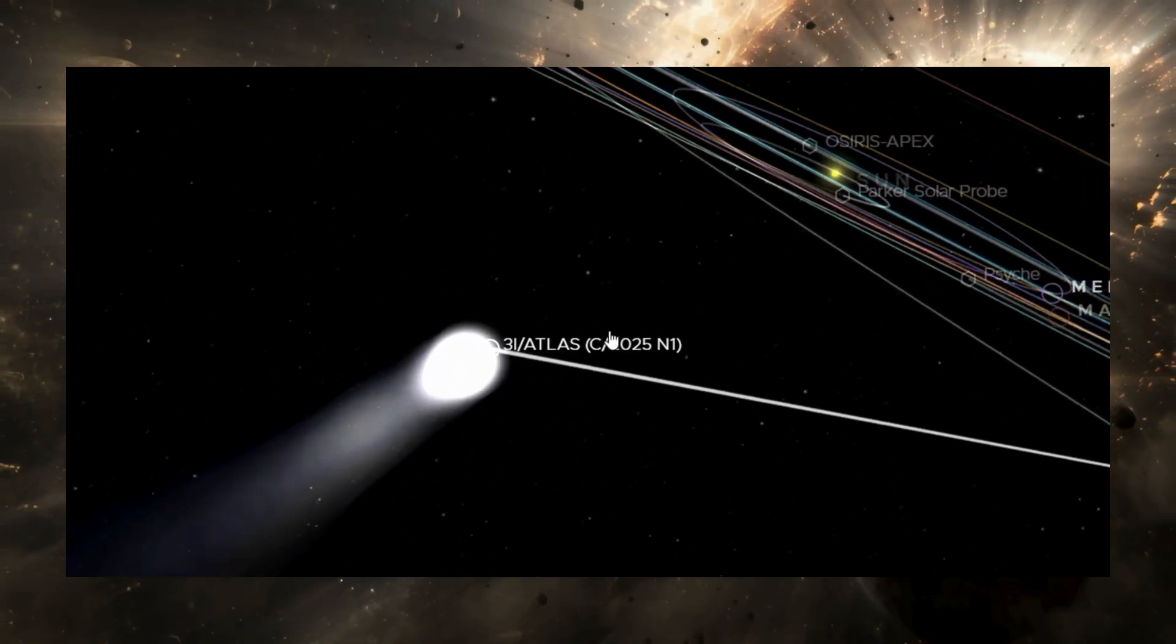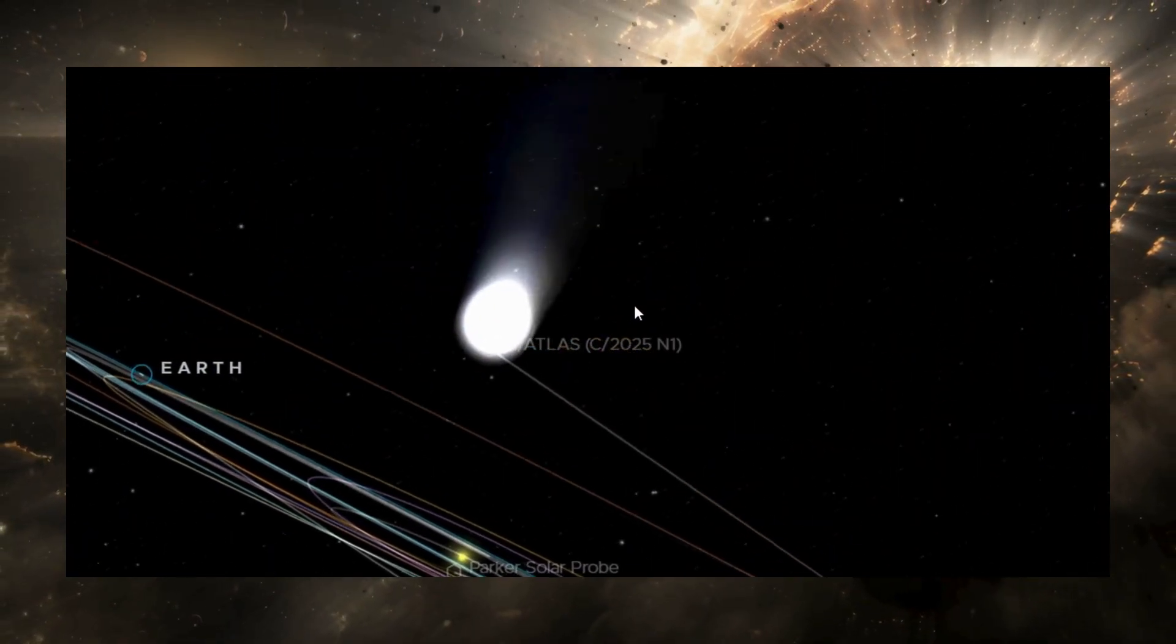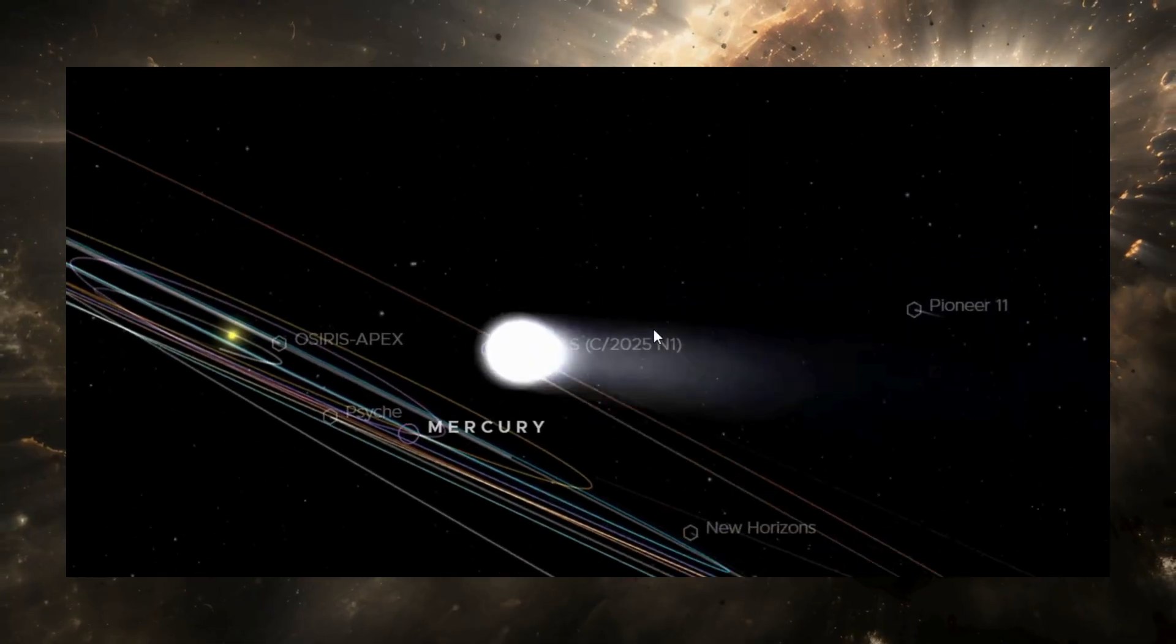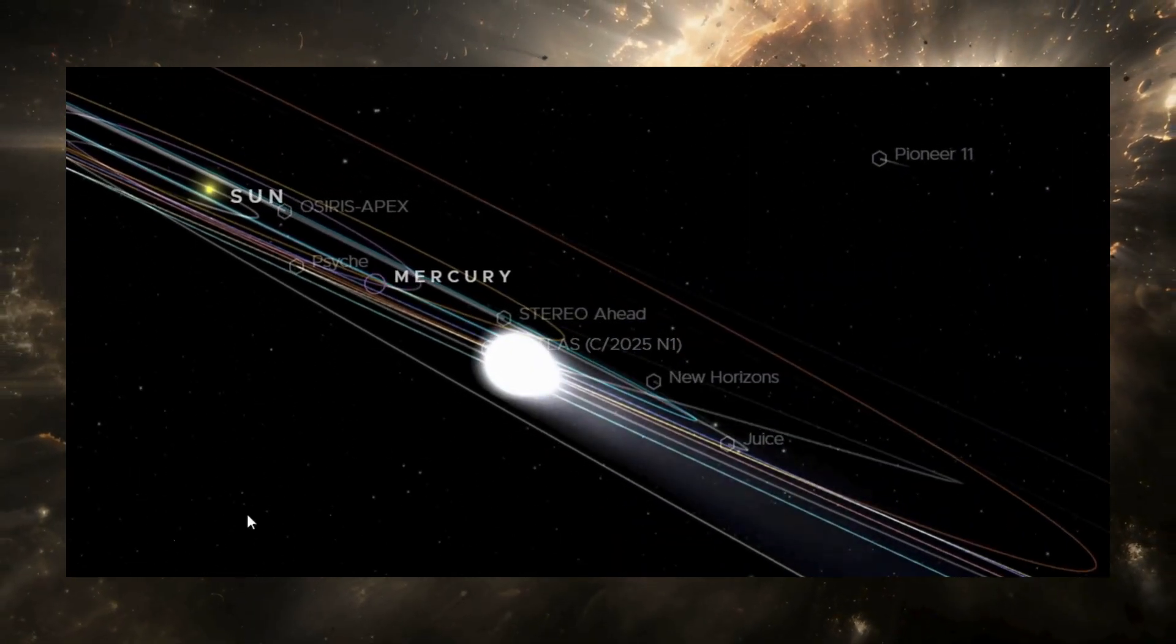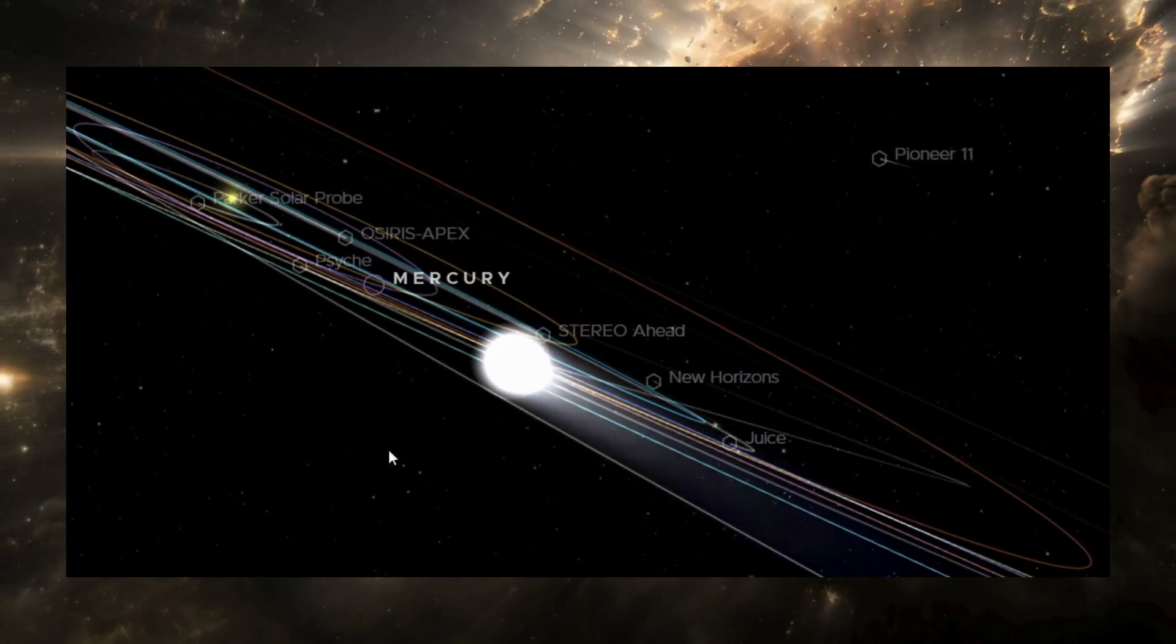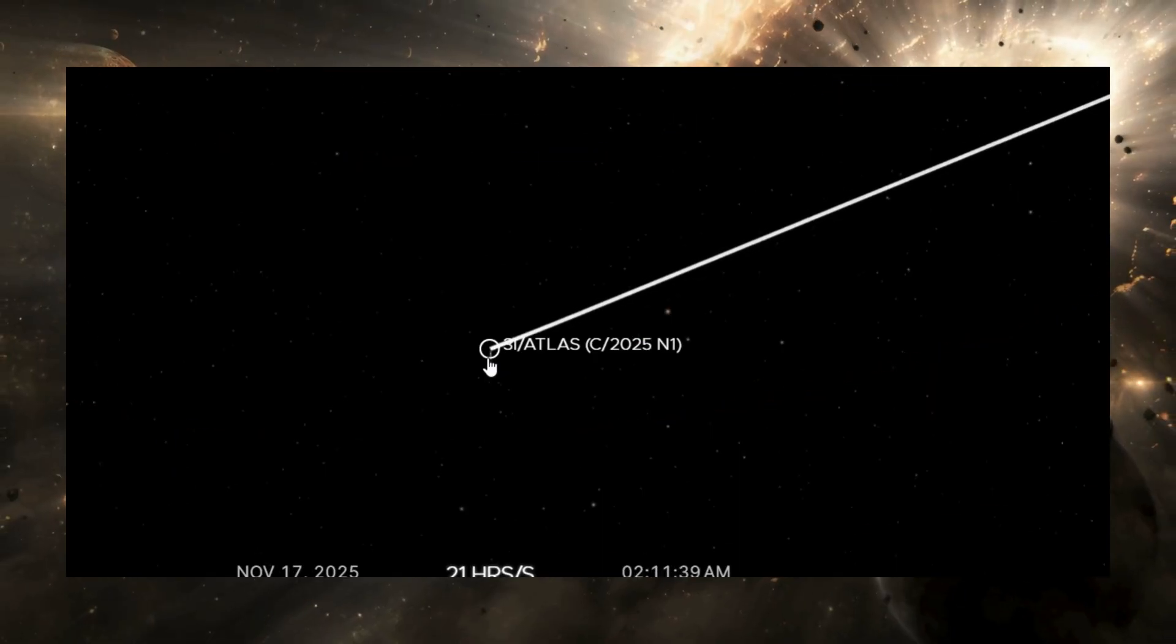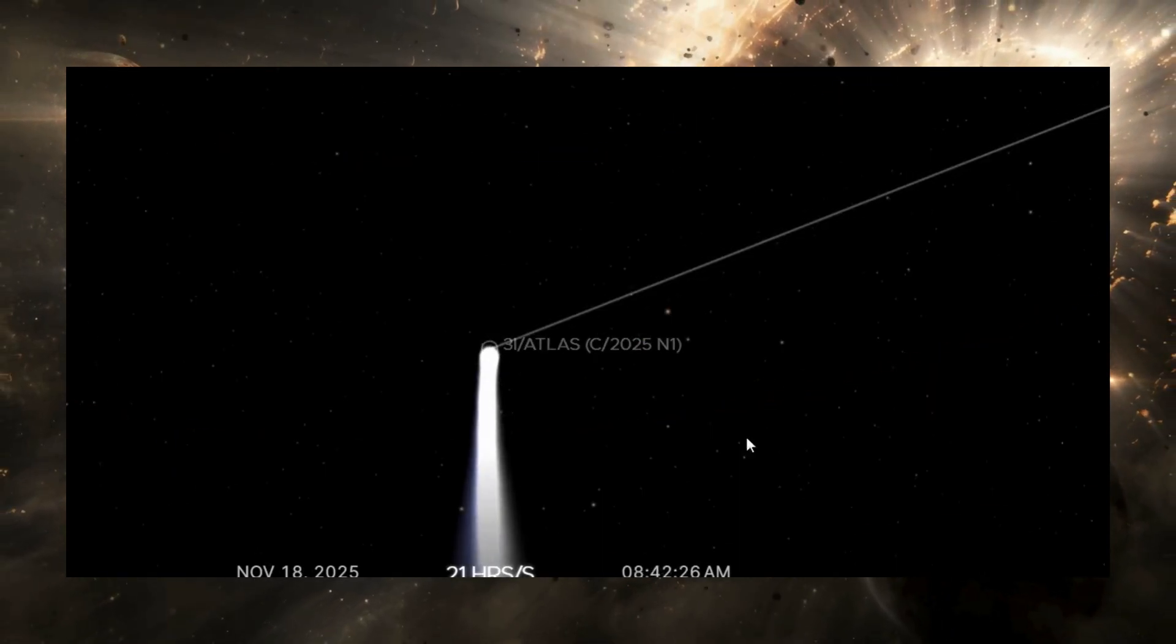fixing it will immediately sharpen our ability to predict future interstellar trajectories. And if, by any chance, there is even a fragment of an artificial component involved, then we are looking at something that rewrites our understanding of the universe.